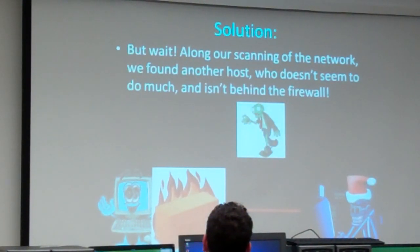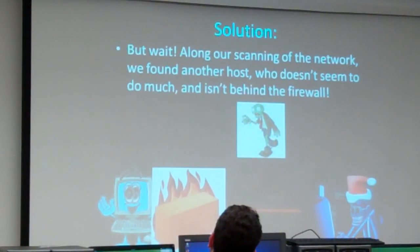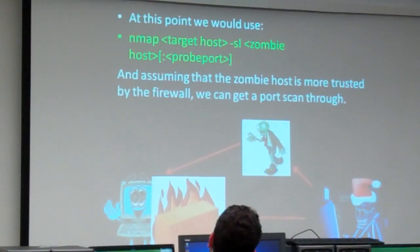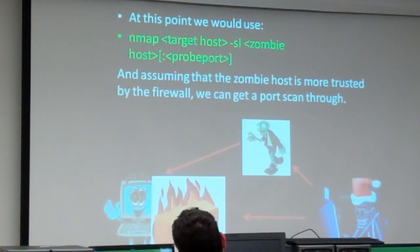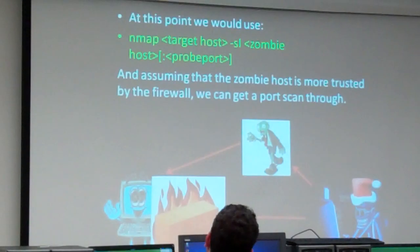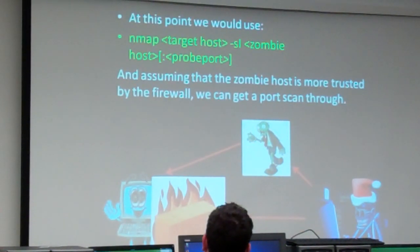However, if along the way we've scanned and found another computer — we'll call it our zombie computer — who isn't sitting behind the firewall but is trusted by the firewall, so another server on the network, we can still get a port scan through by indirect means. We run NMAP with the target host, the hyphen-SL zombie scan flag, and the port, just like any other NMAP scan. The port will go through if the zombie host is trusted by the firewall.